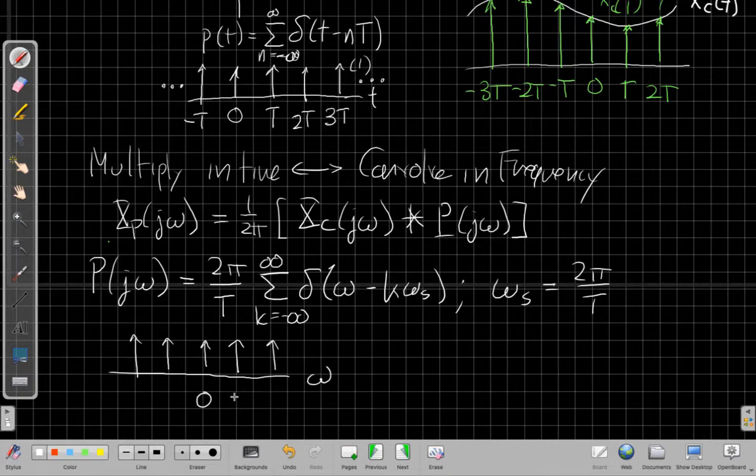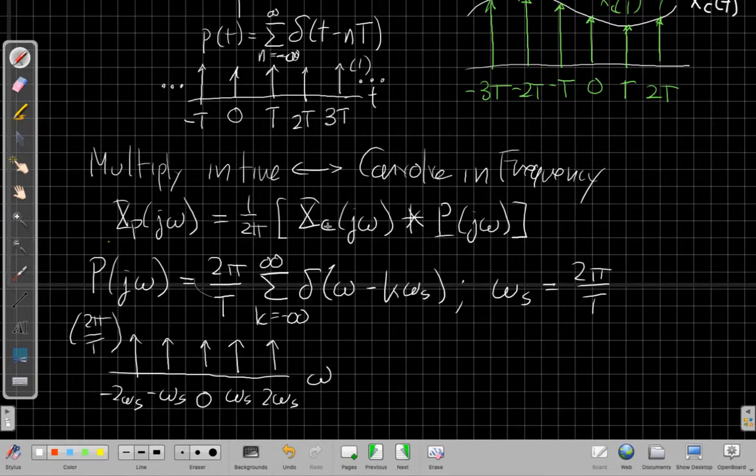if I plot them on the omega axis, look like this, at omega S, 2 omega S minus omega S, going on the other side, with this scaling factor up front says they have area 2 pi over T. Well, now it's time to say, well, whatever this original X of C of T is, it's getting convolved with these impulses.